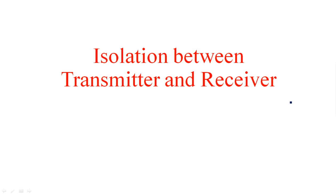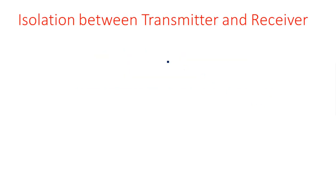In this video, I am going to tell you about isolation between transmitter and receiver. Isolation is nothing but separation. There should be separate elements used, like antennas — separate antennas for the transmitting section and for the receiving section.